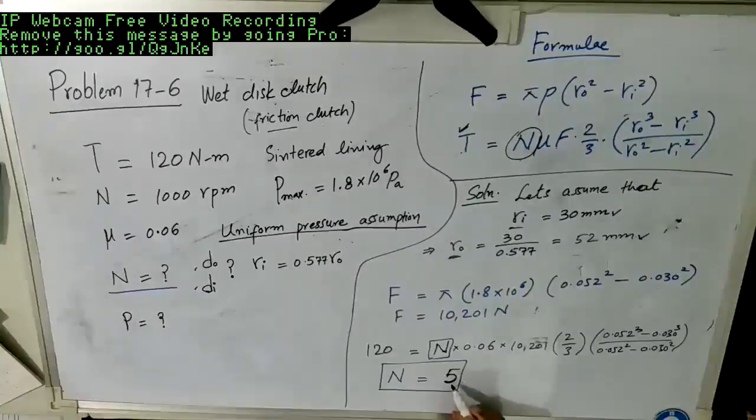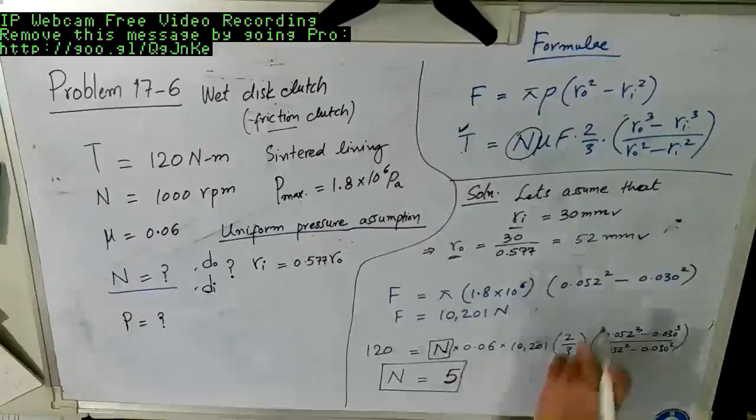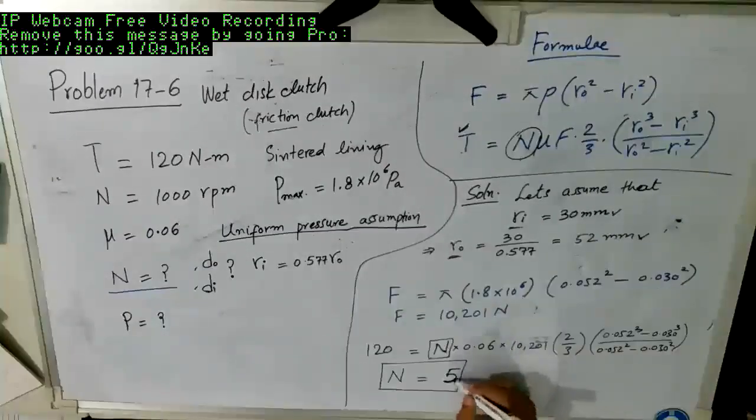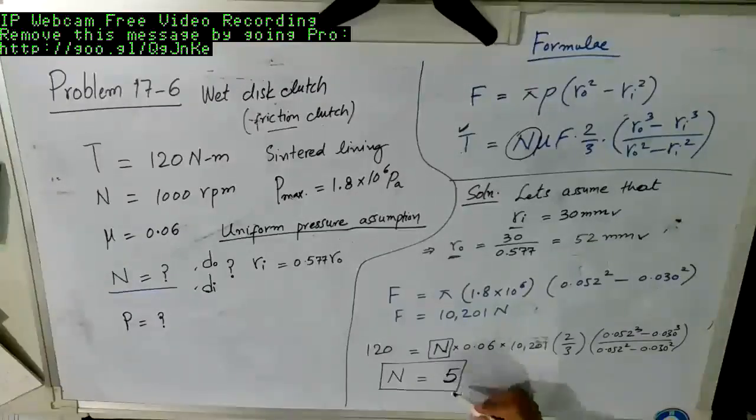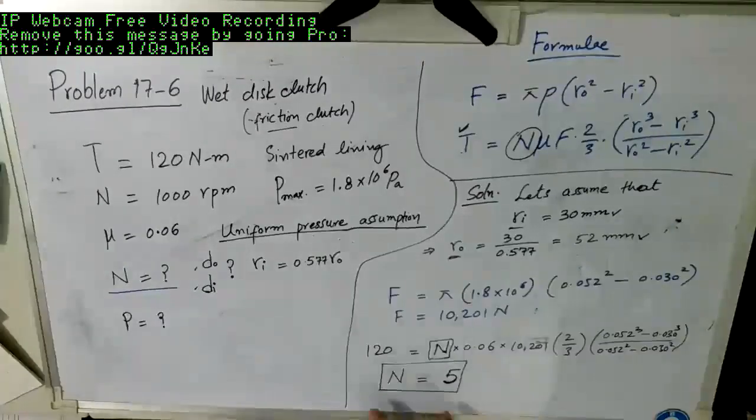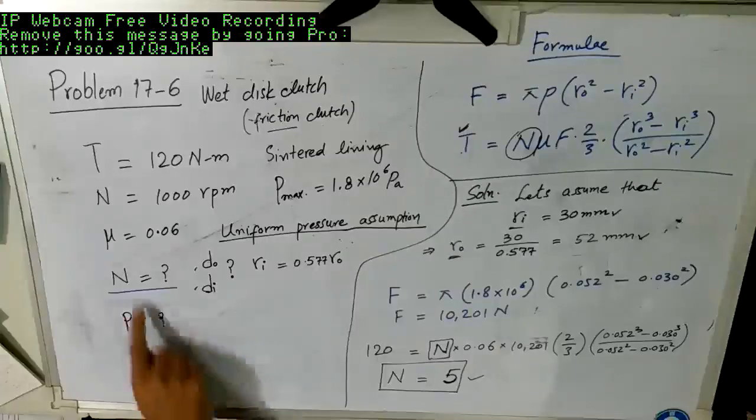If this value is not an integer, it is not a whole number, we can round up it to the whole number. For example, if this answer is 4.8 or 4.5 or something, we will make it a 5, because the number of surfaces cannot be in the fraction. It has to be a whole number. So N is equal to 5, which was asked in the beginning.